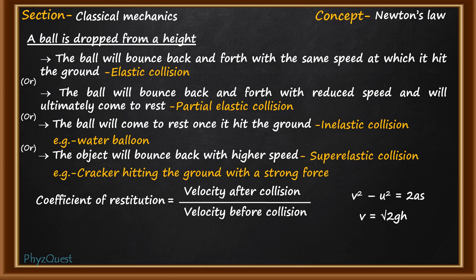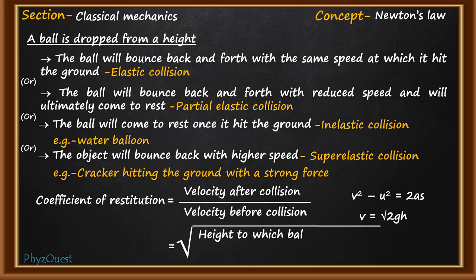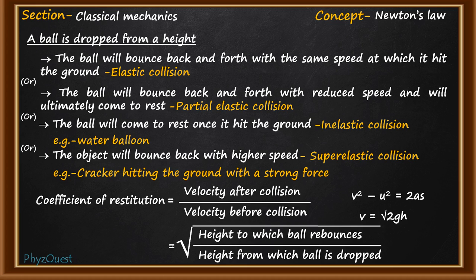Since velocity is proportional to the square root of height, the coefficient of restitution formula becomes e = √(h′/h), where h′ is the height to which the ball rebounds and h is the height from which it is dropped. For different collision types: for perfectly elastic collision, e = 1; for partially elastic collision, 0 < e < 1; for completely inelastic collision, e = 0; and for super-elastic collision, e > 1.